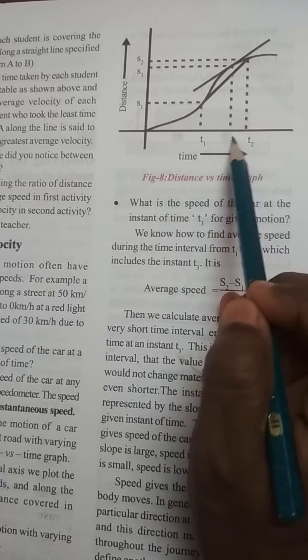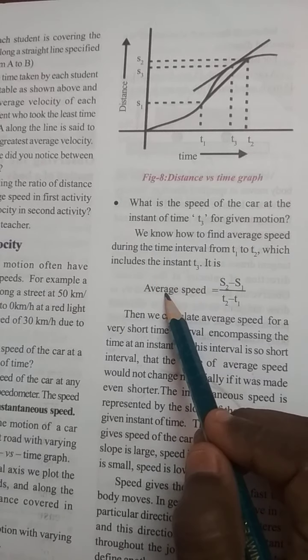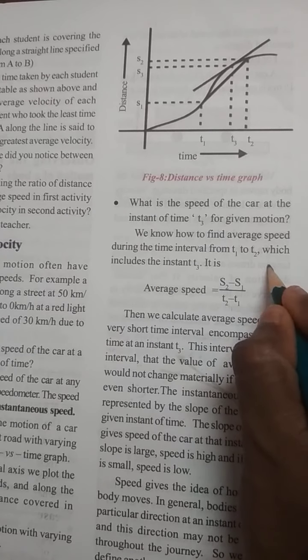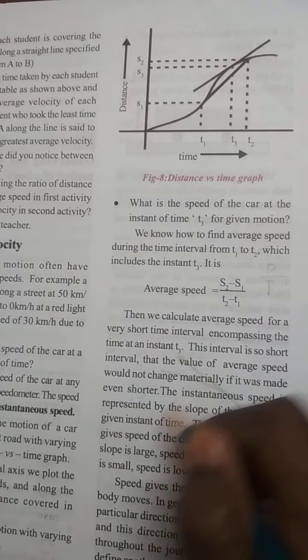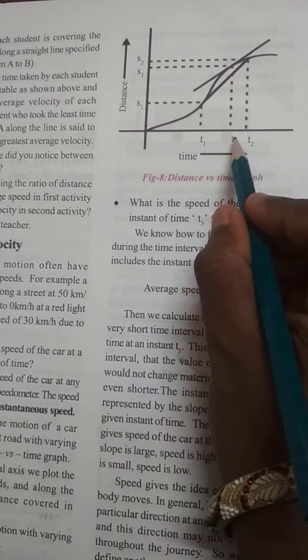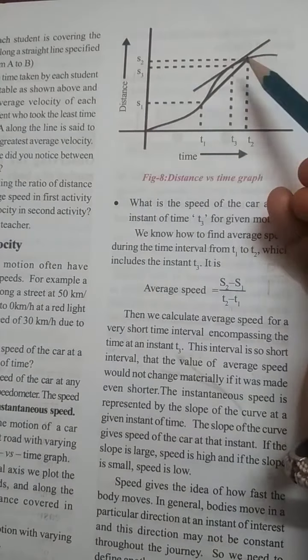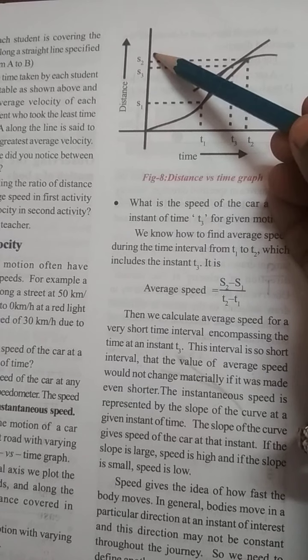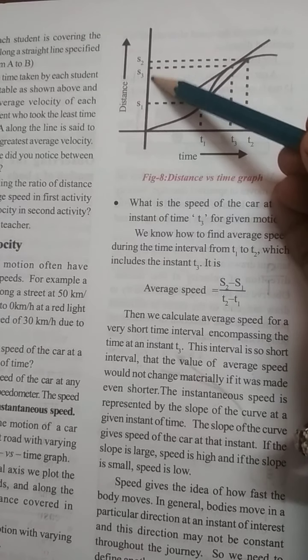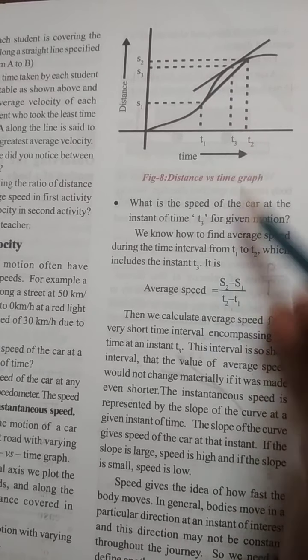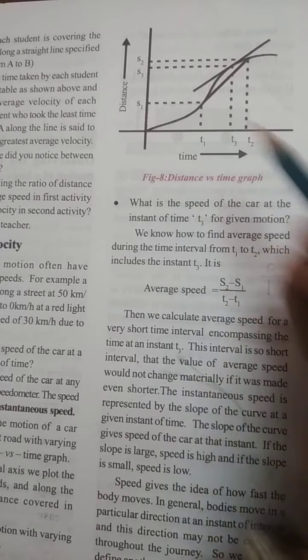At t3, what is the speed of the car? We will see average speed means distance by time taken. So at t3, what is the distance? s2 minus s1. You will get this distance from t2 minus t1.